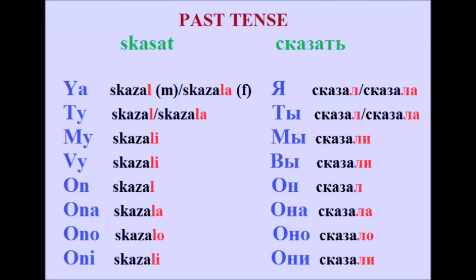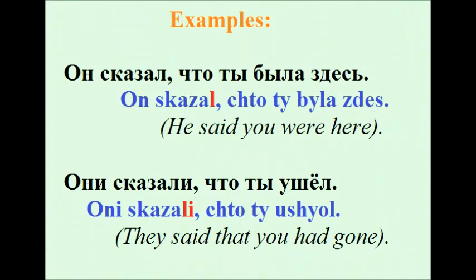Past tense of сказать: Я сказал / я сказала, ты сказал / ты сказала, мы сказали, вы сказали, он сказал, она сказала, оно сказало, они сказали. Examples: Он сказал, что ты была здесь — He said that you were here. Они сказали, что ты ушёл — They said that you left.